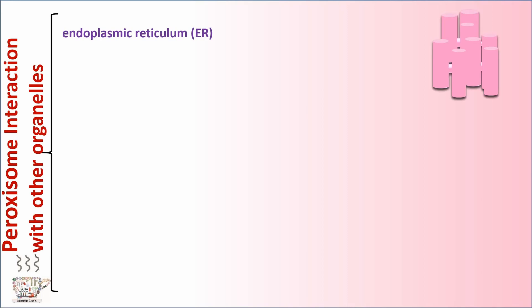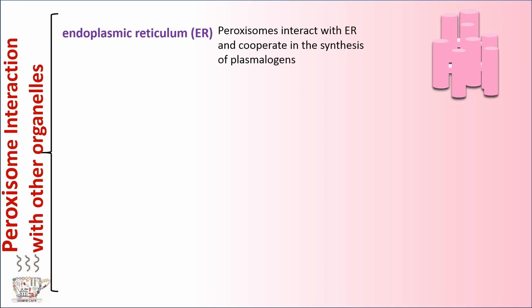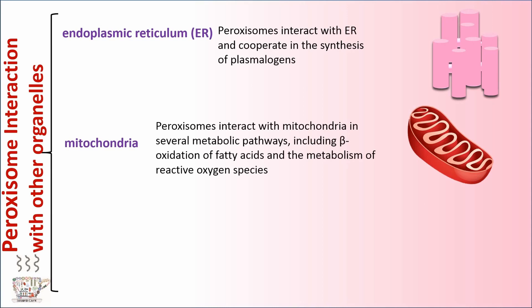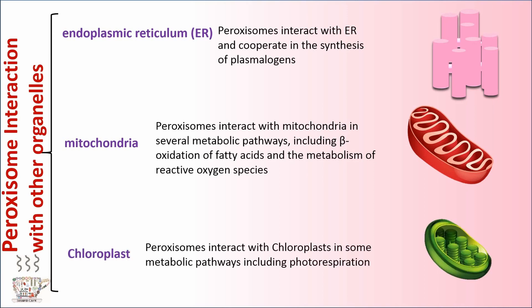Proxysome interaction with other organelles. One of these organelles is endoplasmic reticulum (ER). Proxysomes interact with ER and cooperate in the synthesis of plasmalogens. Proxysomes interact with mitochondria in several metabolic pathways, including beta-oxidation of fatty acids and the metabolism of reactive oxygen species. Proxysomes interact with chloroplasts in some metabolic pathways, including photorespiration.